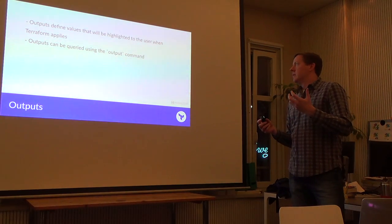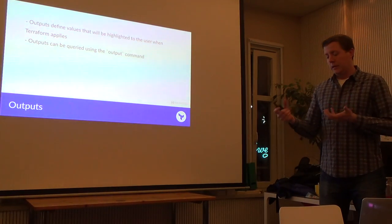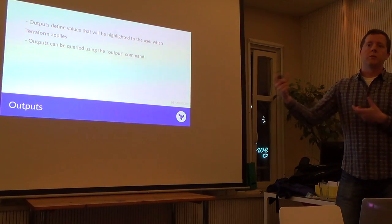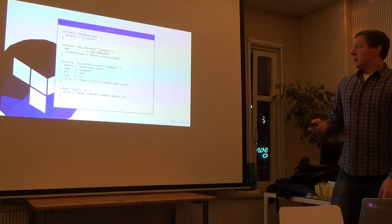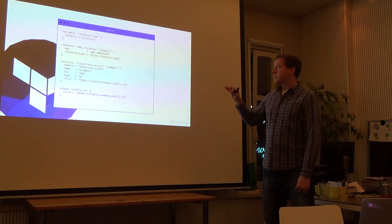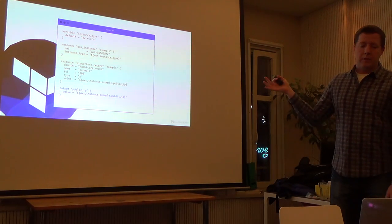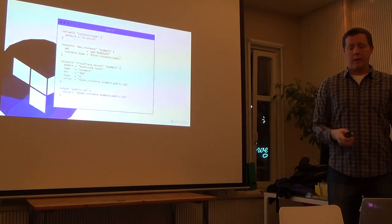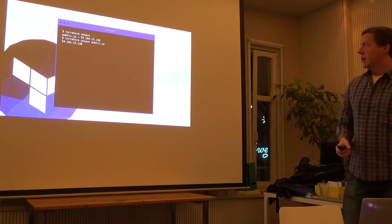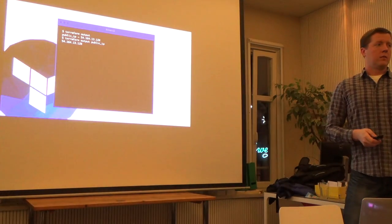Outputs are another feature of Terraform's configuration language. An output allows you to retrieve values off of resources that were created, and to retrieve values out of modules as well. An output is something computed after the resource is created — the public IP address of an instance is an output. With the terraform output command, you can see all defined outputs or pass a specific output name to get a single value.